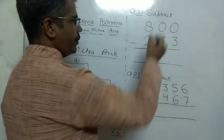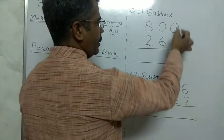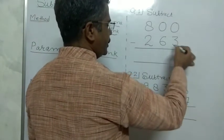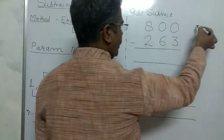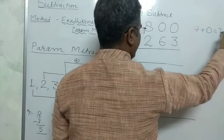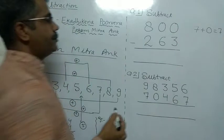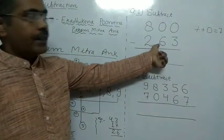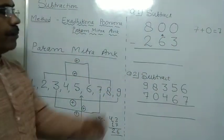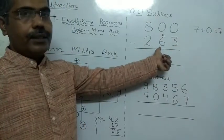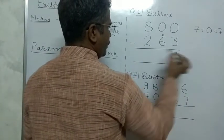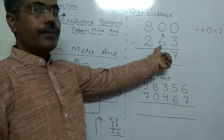Next question: subtract 263 from 800. Here 3 cannot be subtracted from 0. We take the Pramikkar Ankh of 3, which is 7, and add it to the upper digit. Upper digit is 0, so we get 7. We use Ekatecane Purvend in the previous digit. Ekatecane means one more than; Purvend means the digit just before. Here we write 7.